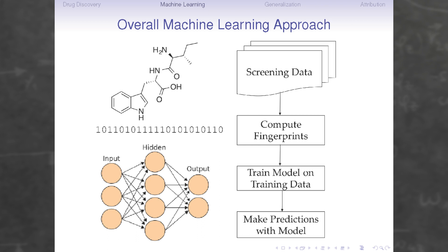These models in general have been shown to work extremely well on the computer — they work well when tested on randomly held-out validation sets — but they do not work nearly as well in the real world. For the rest of this talk, I'm going to explain some of the issues that might explain why.